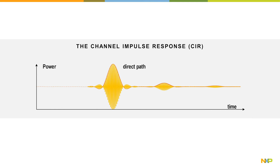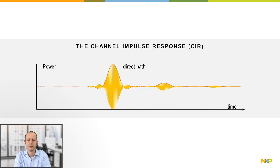The channel impulse response represents the multi-path propagation behavior. It can be understood as the energy received at the receiver plotted over time. If the direct path is the strongest pulse received, we are in line-of-sight conditions. If the direct path is not the strongest pulse received, we are in non-line-of-sight conditions.